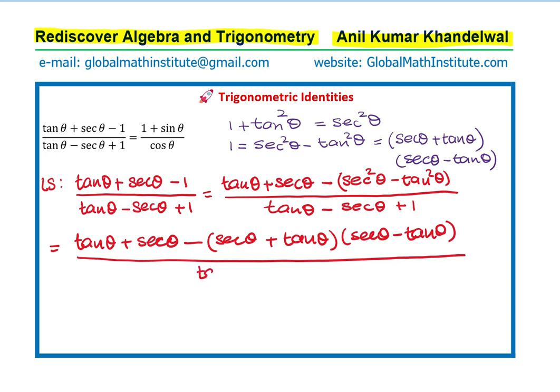Over the denominator, which is tan θ - sec θ + 1. Now we can factor tan θ + sec θ from the numerator. We write this as tan θ + sec θ, and we get here 1 minus the other factor, which is sec θ. I will change the sign from minus tan θ to plus, since minus is there. So we change the sign to sec θ + tan θ.